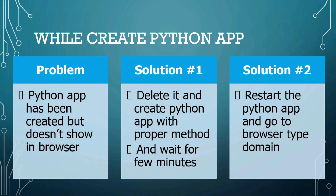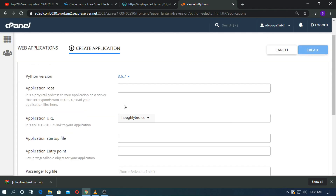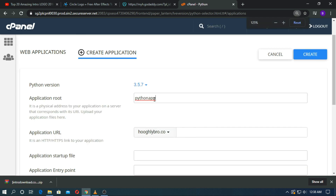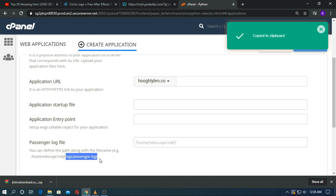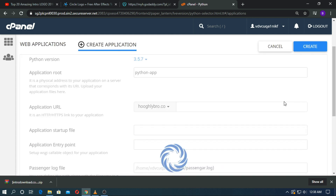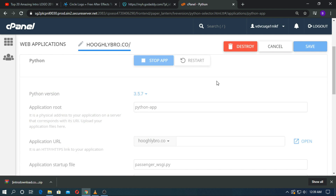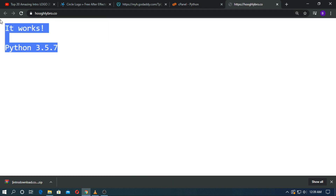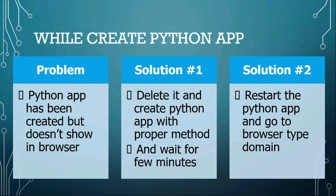Third, when creating a Python app, there are many versions available — choose one, set the application route, and create it. Then restart the server, type your domain, and you will see the Python app is working. If it doesn't work, contact your hosting provider — it will work but may take some time. Make sure Python is working before running Django.